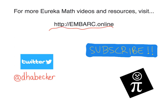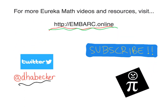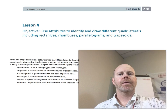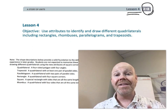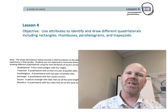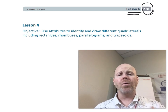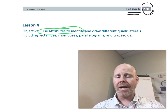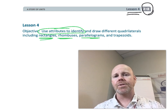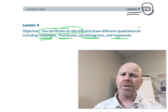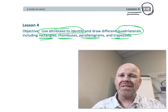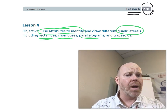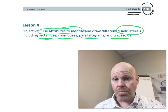Hey, thanks for watching this video. There's more at Embark Online, you can tweet me. This is second grade module 8 lesson 4. In this lesson, students are going to be using the attributes we've been talking about to identify a whole bunch of new polygons — things like rectangles, rhombuses, parallelograms, trapezoids. The point is they're all quadrilaterals: four-sided figures.